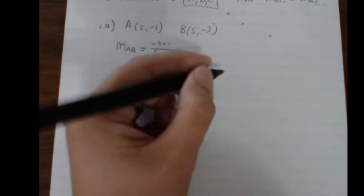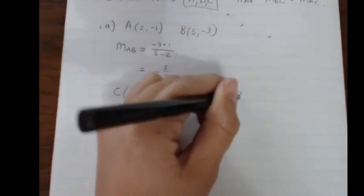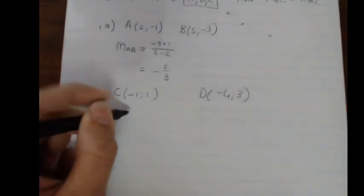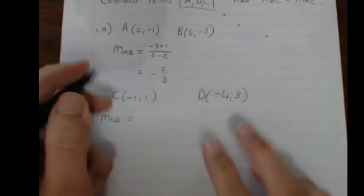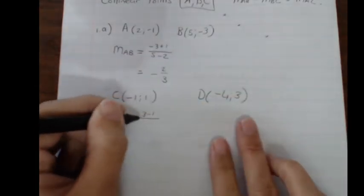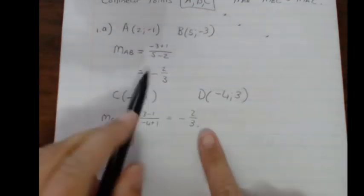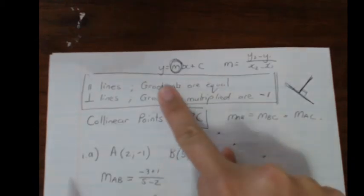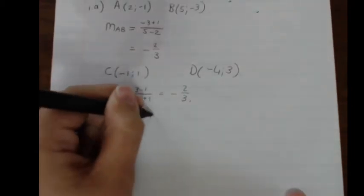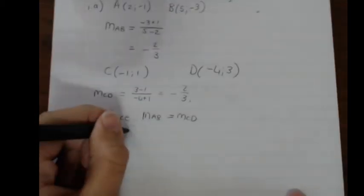For the gradient of CD in question A, C is (−1, 1) and D is (−4, 3). Calculating the gradient of CD gives two over negative three, which is also negative two over three. Since the gradients are equal — M_AB equals M_CD, both are negative two over three — that means AB is parallel to CD.